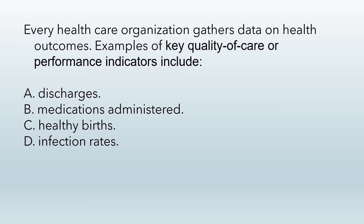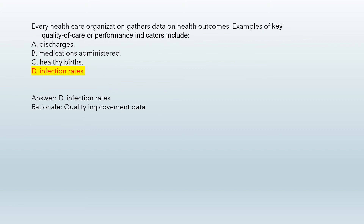Every healthcare organization gathers data on health outcomes. Examples of key quality of care or performance indicators include: A. Discharges. B. Medications administered. C. Healthy births. D. Infection rates. Answer: D. Infection rates. Rationale: Infection rates are quality improvement data and a key performance indicator.